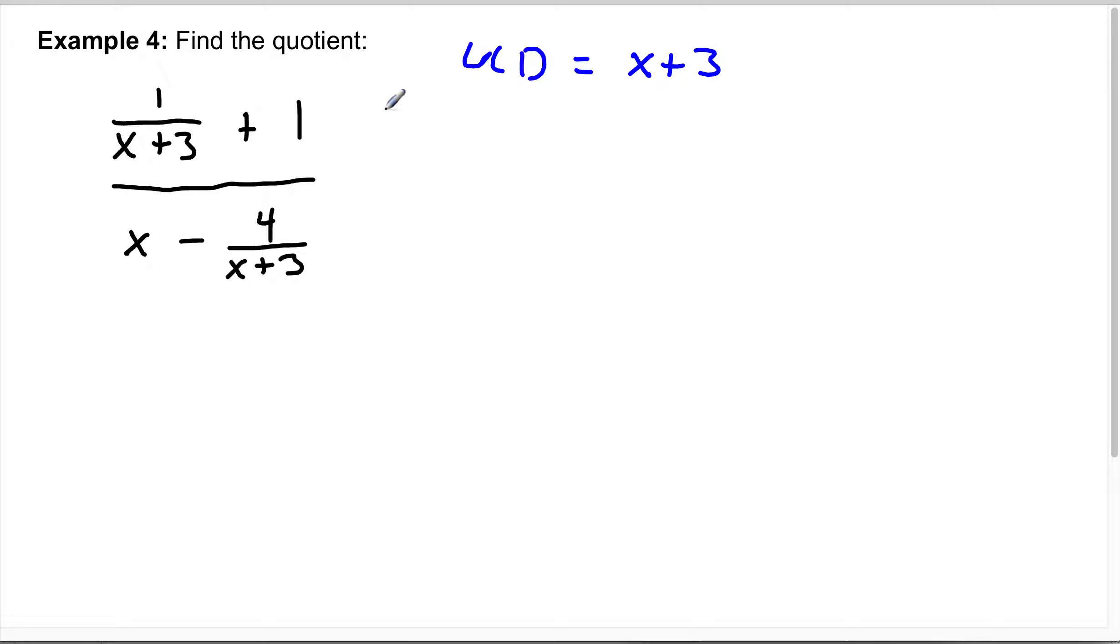Okay, so I'm going to multiply the top times x plus 3 and the bottom times x plus 3. So we're going to have to do a little distributing and cancelling here.